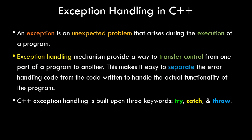The exception handling mechanism provides a way to transfer control from one part of the program where the error exists to another. This makes it easy to separate the error handling code from the code written for the actual functionality of the program, which essentially means that even if there is an exception, your program won't crash and you can handle that exception with certain code.